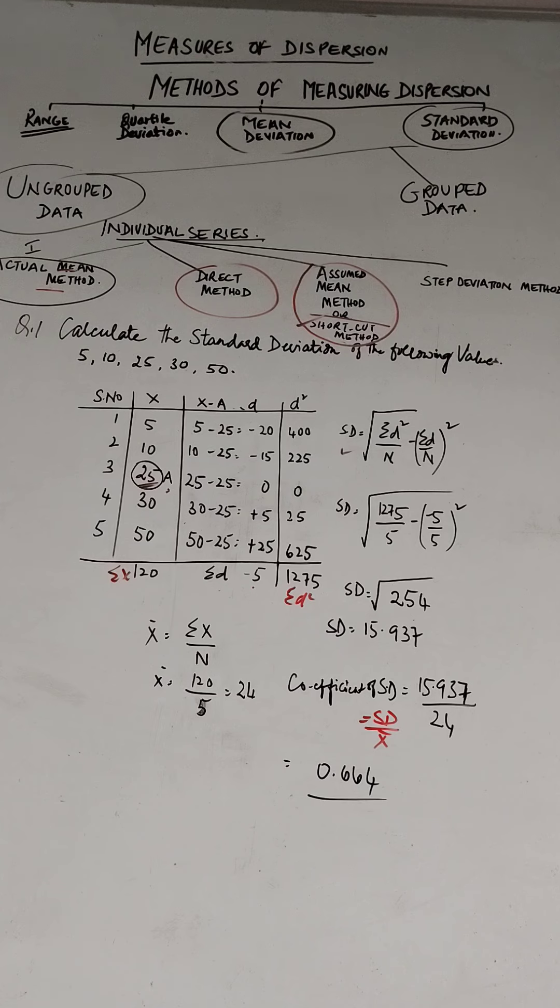Calculate the sum of these deviations to obtain sigma d. So that's how we get sigma d as minus 5. Then square the deviations taken from the assumed mean.